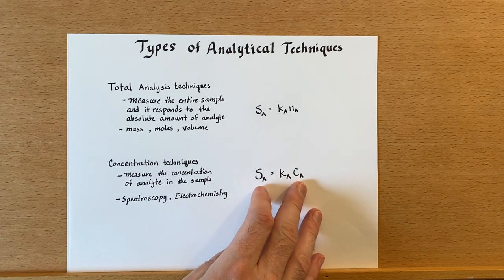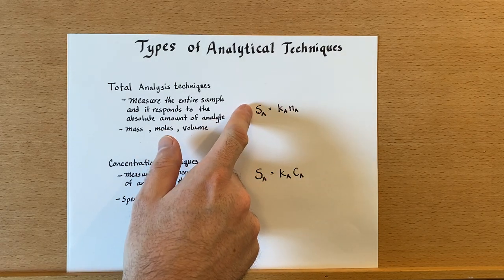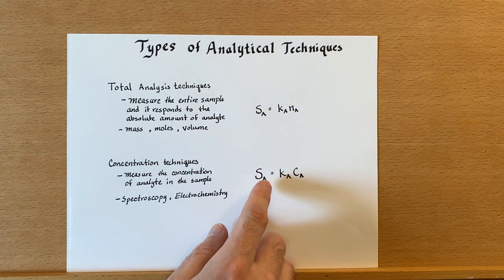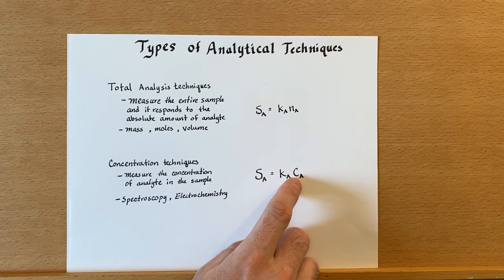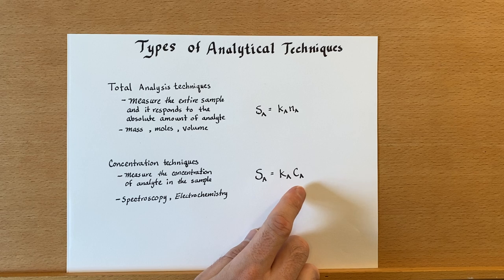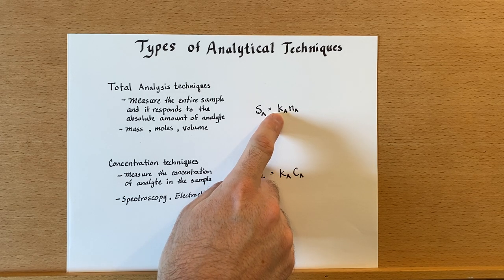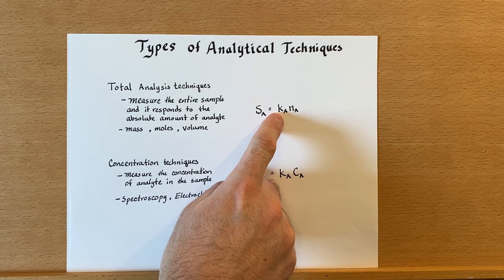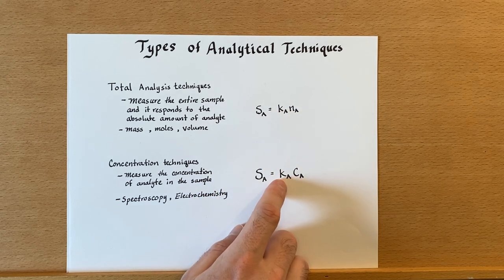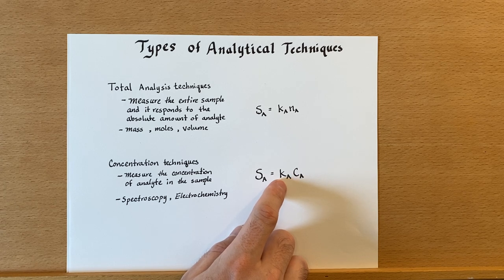And here's the equation that we use for that, which is identical to the total analysis technique equation, except that in this case, it's proportional to the concentration. Now, unlike up here, where we can know from the molar mass or the stoichiometry, we can figure this out. Down here, we generally have to measure this experimentally.